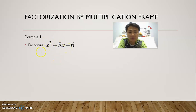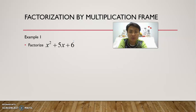Similarly, if I want to take out common factor 5, I do not have it here or here, so I cannot use common factor either. So the two criteria before applying multiplication frame: first, it must have three terms; second, there must be no common factor for at least one of the terms. We can observe that there's no common factor for at least one of the terms here, so we can now use multiplication frame.